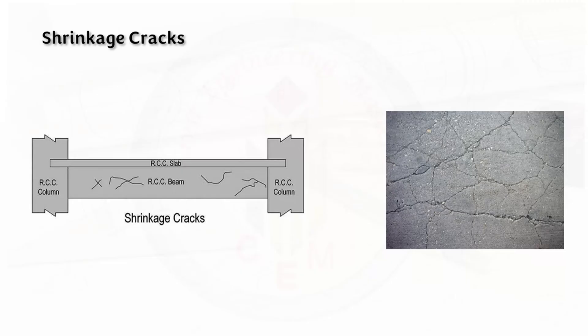Shrinkage cracks can occur due to the shrinkage of concrete as it cures and dries. Generally, these cracks are very short and can appear anywhere on the beam surface. These shrinkage cracks are not structurally significant, but wide or extensive shrinkage cracks can affect the beam's durability and aesthetics.